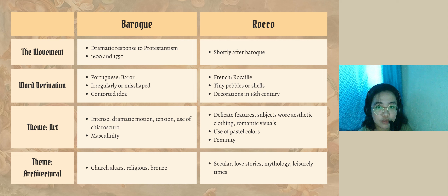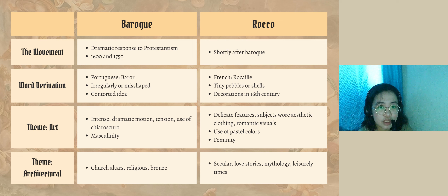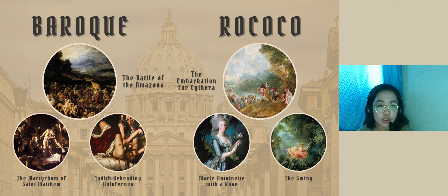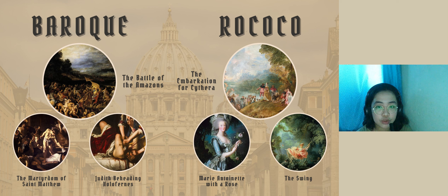On the other hand, Rococo lasted from about 1700 to 1770. If the Baroque glorifies the church, in Rococo it glorifies nobility. Their artwork celebrated wealth, nobility, leisure, and life with ease. In general, Rococo is characterized by easy-going, light-hearted treatments of mythological and courtship themes, rich and delicate brushwork, a relatively light tonal key, and sensuous coloring. Baroque examples include the Battle of the Amazons, the Martyrdom of Saint Matthew, and Judith Beheading Holofernes. Rococo examples feature elaborate detail, warm pastel colors, playful scenes, and pastoral settings — often depicting gatherings or outdoor parties featuring wealthy aristocrats, such as Embarkation for Cythera and Marie Antoinette with a Rose and The Swing.